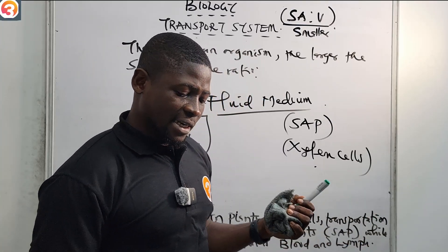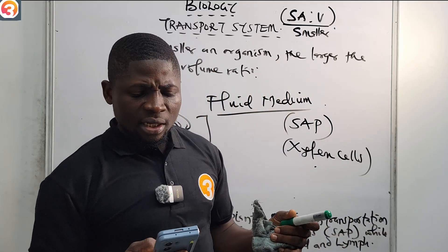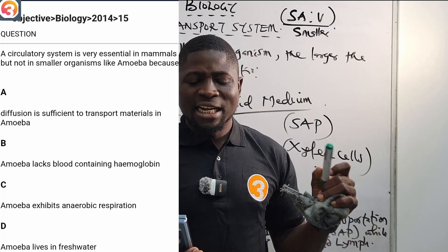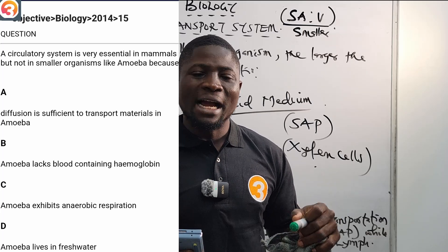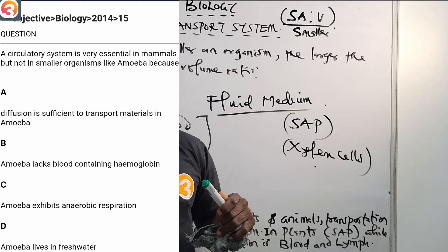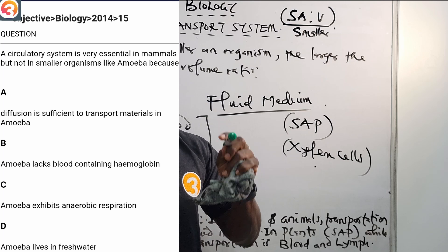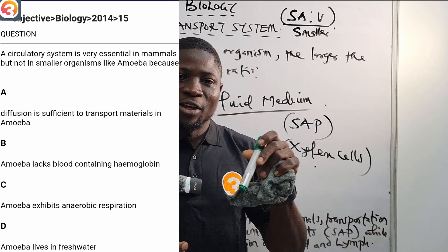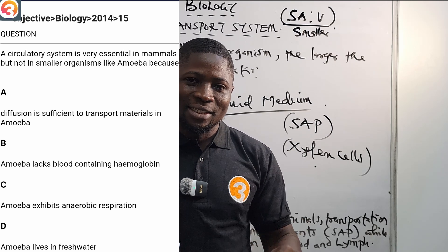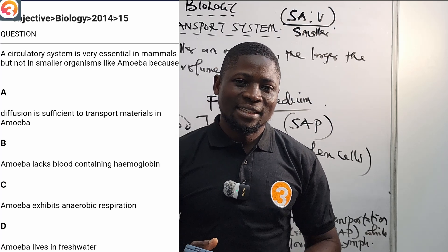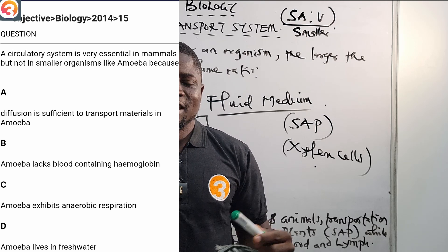Now let us revisit the 2014 JAMB Question 15: 'A circulatory system is very essential in mammals but not in smaller organisms like Amoeba because...' I think you can now answer the question. Please drop your answer in the comment section — say A, B, C, or D — and explain the reason. My name is Master T, and I will see you in the next episode where we continue talking about the transport system.